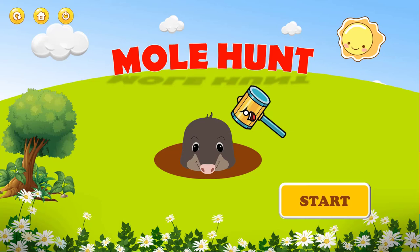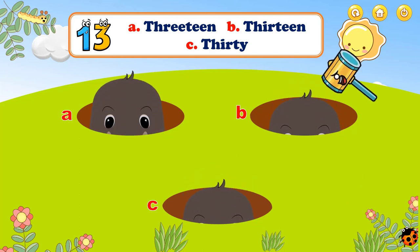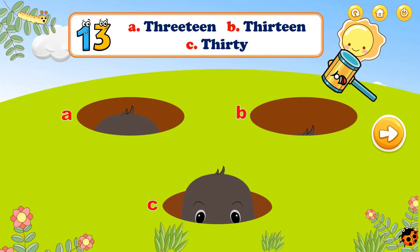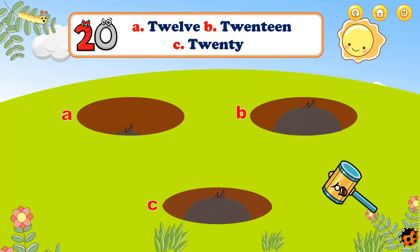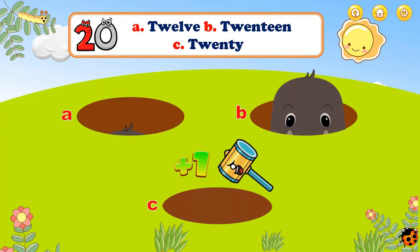Now it's play time! Trong trò chơi này, các bạn hãy lựa chọn cho cô đáp án đúng với câu hỏi. Which one is number 13? A, B, or C? It's B, yeah, it's B. Which one is number 20? It's C, very good, it's C.